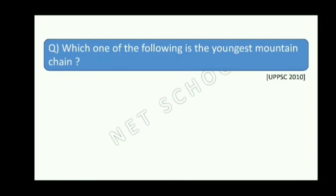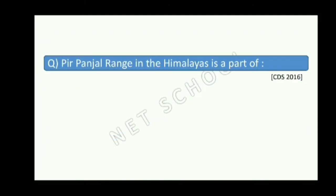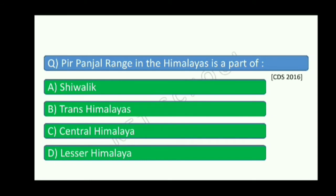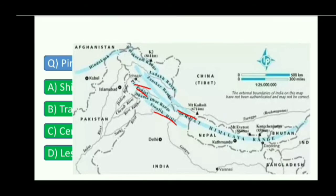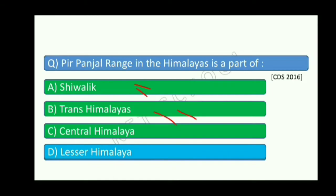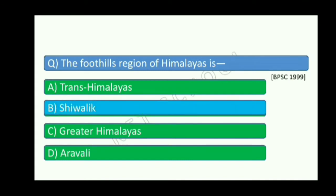Which one of the following is the youngest mountain range? The answer is Shivalik, because the Shivalik Himalayas are the youngest. The Himalayas are young fold mountains. The Greater Himalayas and Shivalik are different parts. The Lesser Himalaya is located between the Greater Himalaya and Shivalik. The foothills region of the Himalayas — option B — is Shivalik.